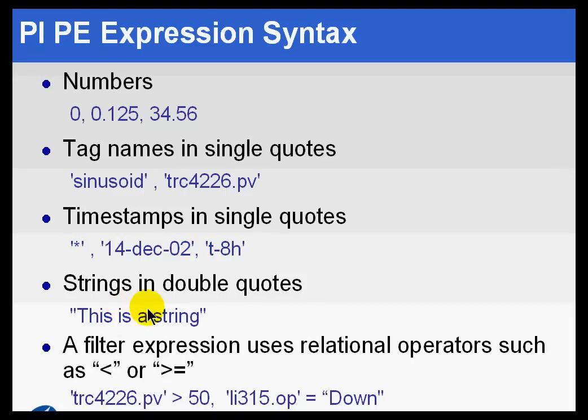Strings are always going to be in double quotes, and that would include things like statuses, like a digital state, like open close or auto manual. Those are strings.